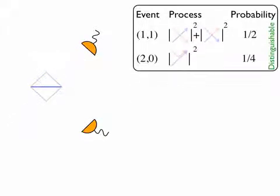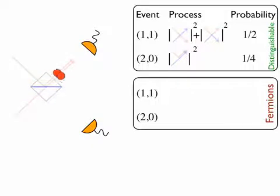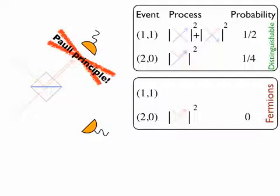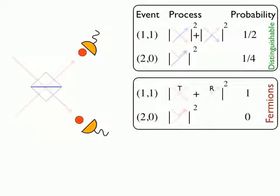The event probabilities for identical particles are different due to collective interference. For two fermions, the particles cannot end in the same output mode due to the Pauli principle. In turn, the two processes with both particles transmitted or reflected are indistinguishable and interfere constructively. There is always one fermion in each output mode.